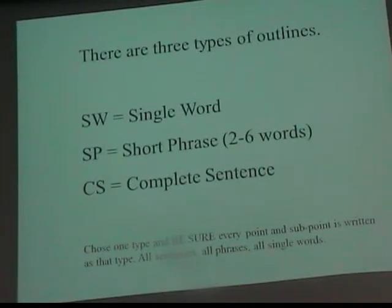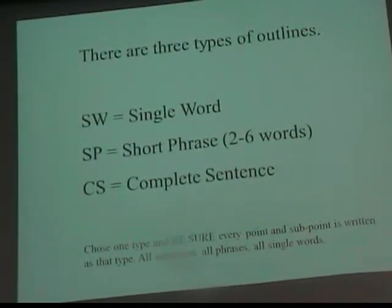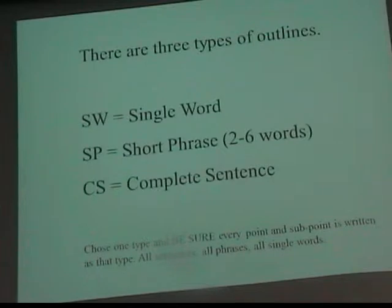SW is the abbreviation for single word. SP is the abbreviation for short phrase. And CS means complete sentence. If you bring me your outline of your original oratory for pre-grading before the deadline — that's up until the 24th — you still need to tell me whether it's short phrase, single word, or complete sentence, especially if I'm not sure by looking at it. Because some people like to quibble about the definition of a short phrase, I've defined it as two to six words. Anything over six isn't short, and if it's under two, it's single word.